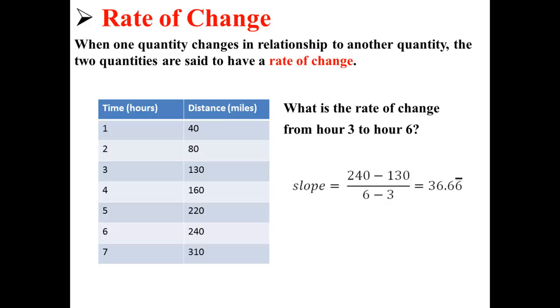So we get a slope of 36.66 repeating, which means that from hour three to hour six, the rate of change was 36.66 repeating miles per hour.